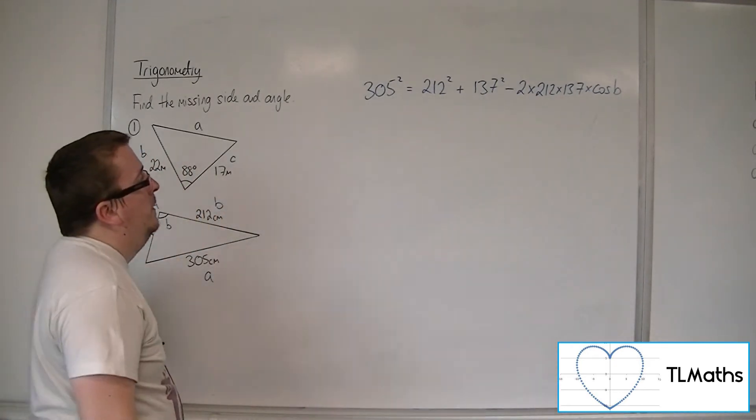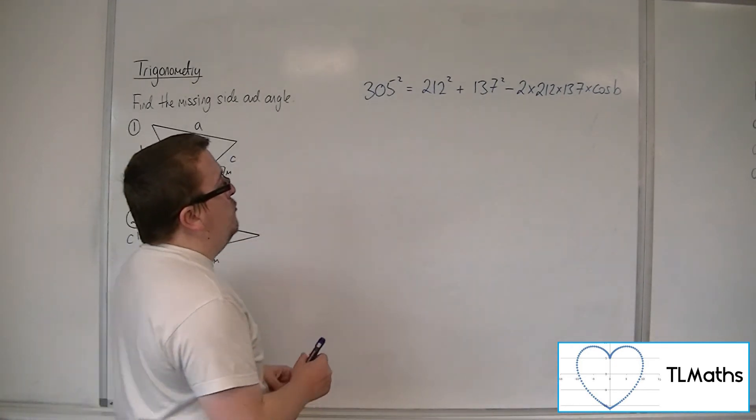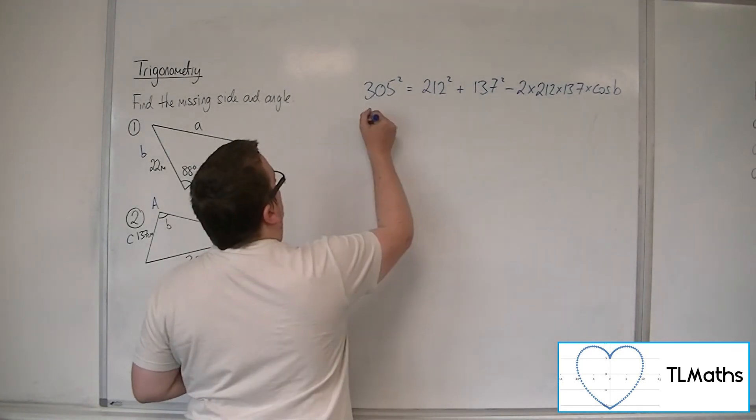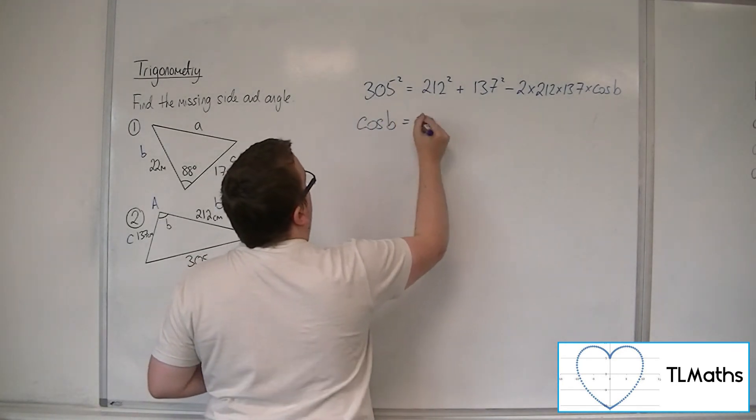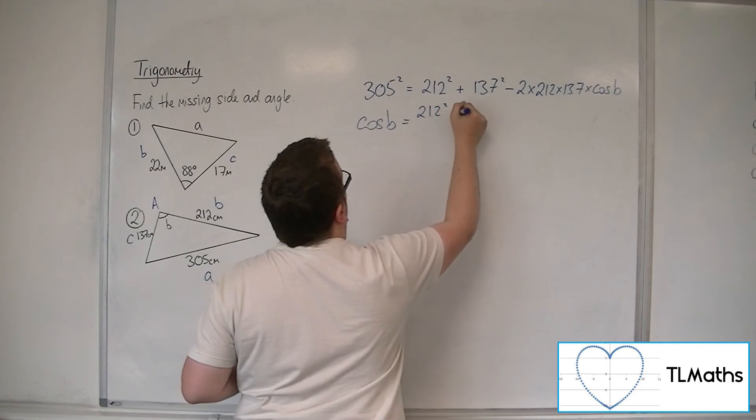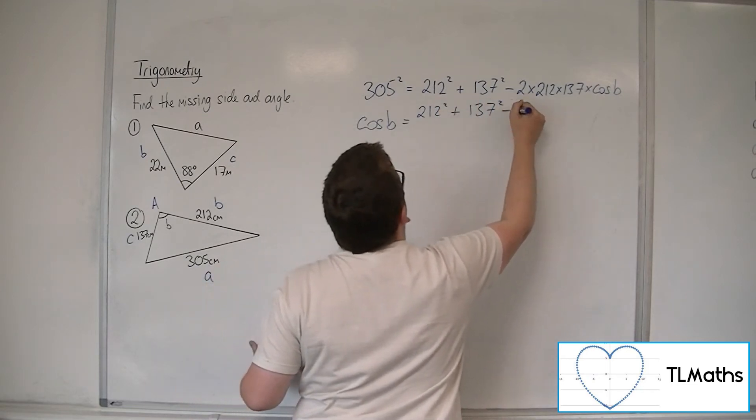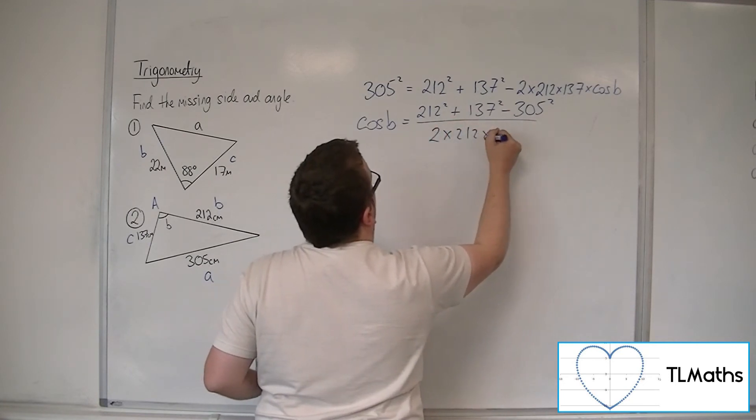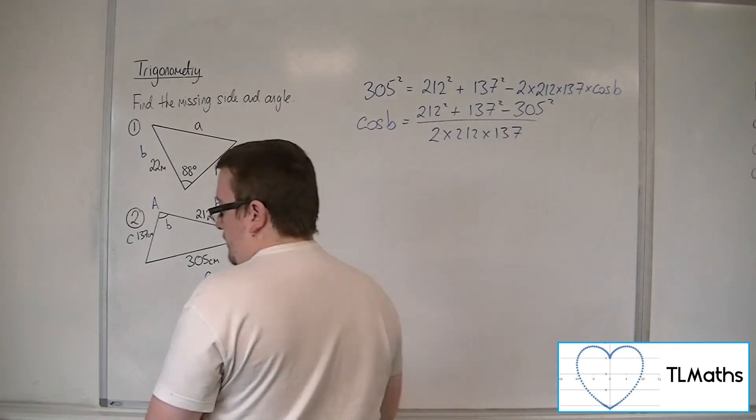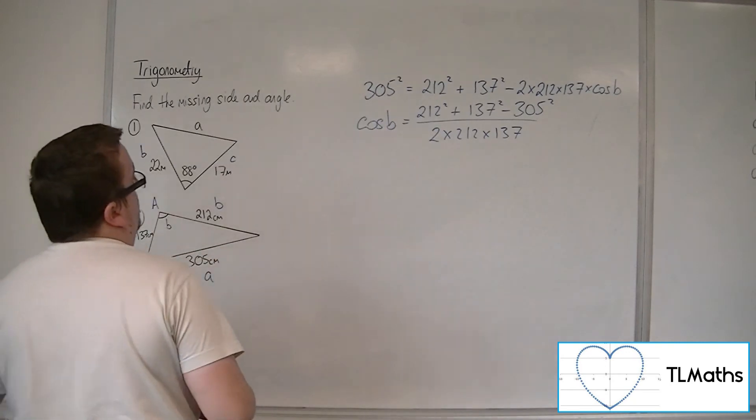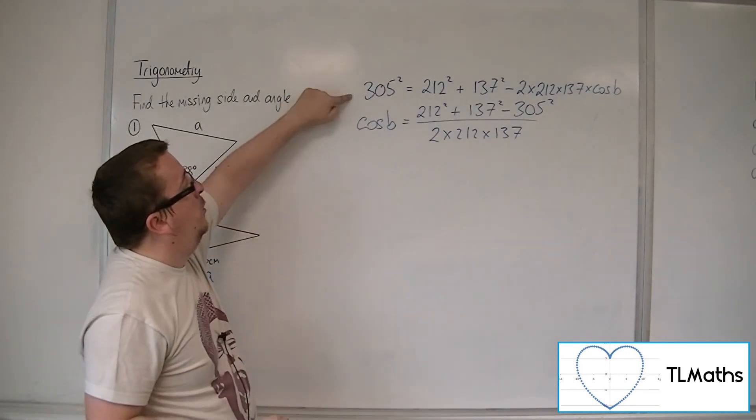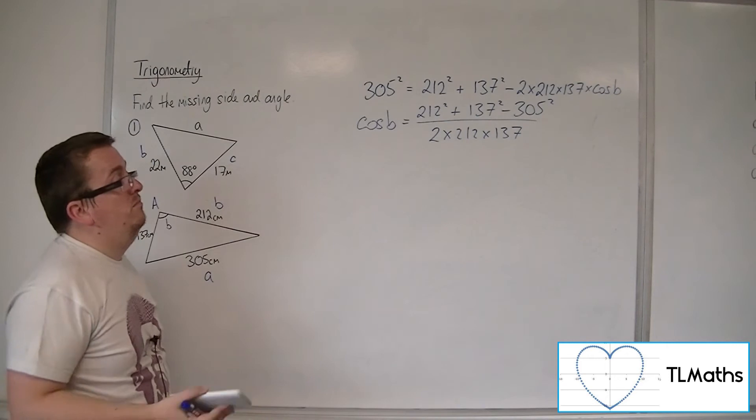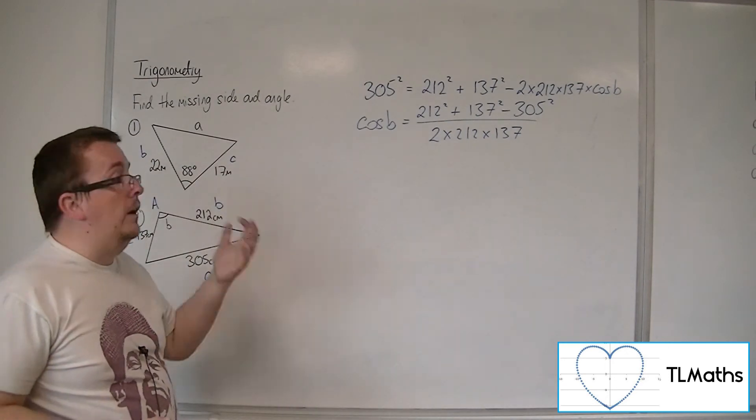Right, so the rearranged version of this would be cos B is equal to 212 squared plus 137 squared minus 305 squared, all over 2 times 212 times 137. Now, as I said, you either remember that rearranged form, or you remember that form, or you remember both.